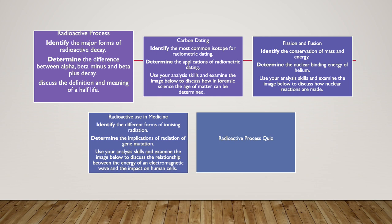We will use our analysis skills to examine the image and discuss the relationship between the energy of the electromagnetic spectrum and the electromagnetic waves and its impact directly on human cells. Specifically we will be learning about genetic mutations. We will discuss how we can stay safe from these types of radiations.